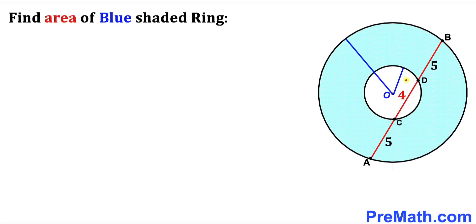Here's our next step. Let's go ahead and label the radii of these circles. I'll call the radius of the smaller circle lowercase r, and the radius of the big circle uppercase R.